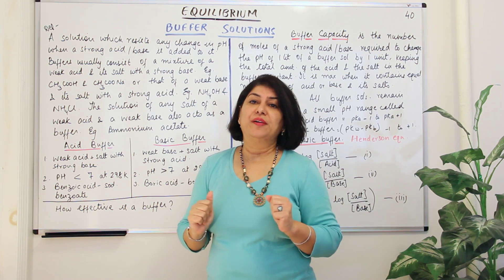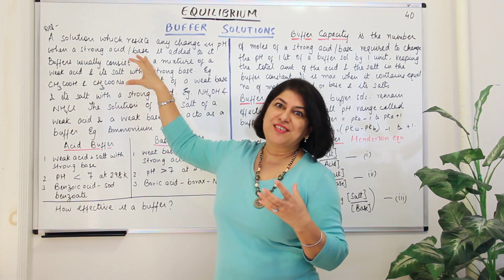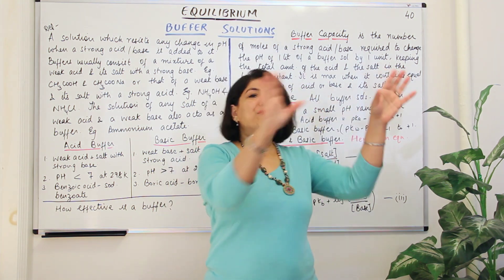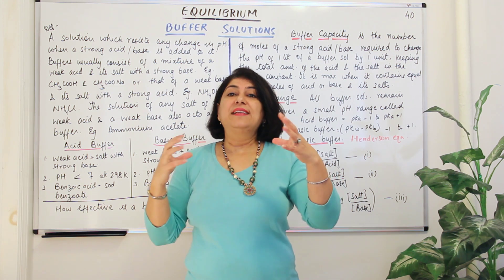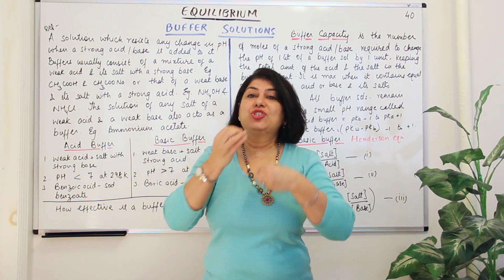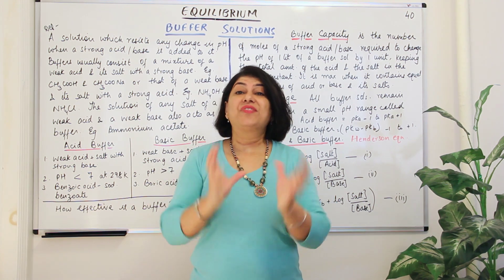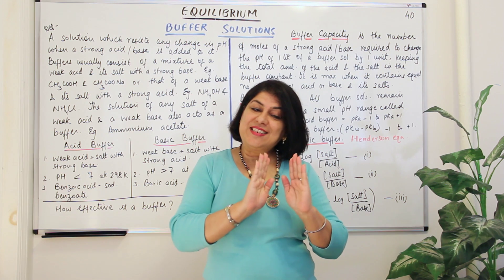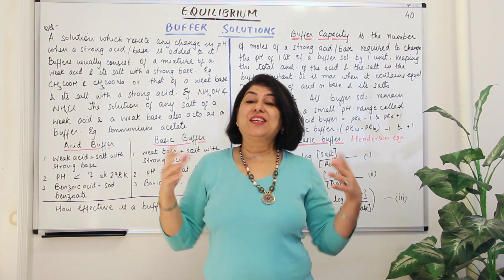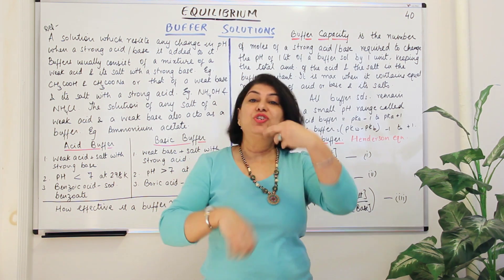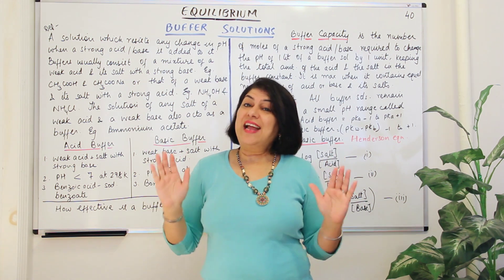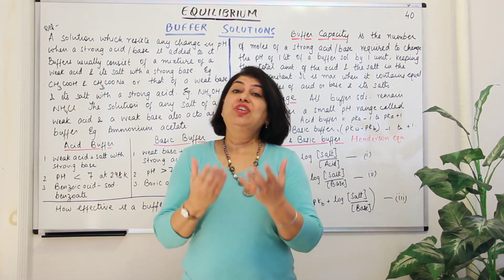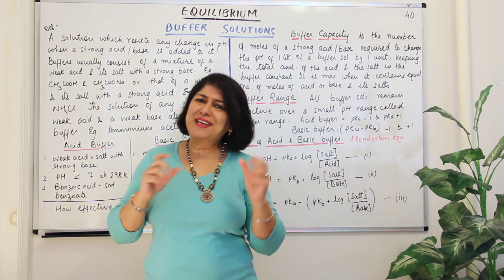A very common example of a buffer is our blood. You can imagine how important buffers are from just the fact that we eat so many things, there are sometimes toxic fumes, and the foods we eat can be acidic or basic. The stomach contains concentrated hydrochloric acid, yet the blood in our body is maintained at a certain pH because it is a buffer, so the pH is still maintained and that keeps the body safe. Even human urine is a buffer solution.